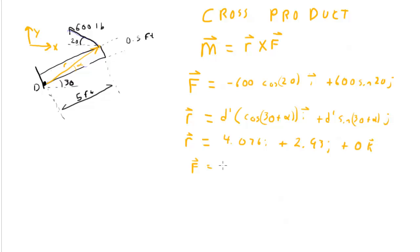F, substituting the numbers, is minus 563.81i plus 205.21j plus 0k. So now we have everything we need to do that cross product formulation.